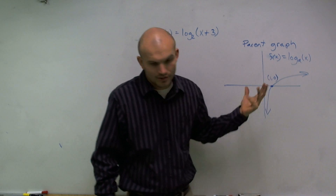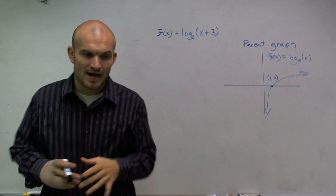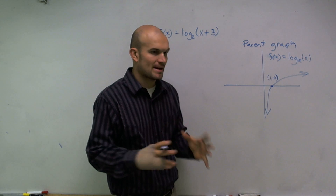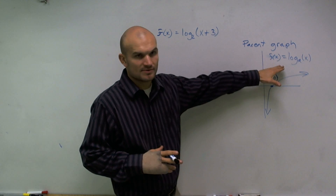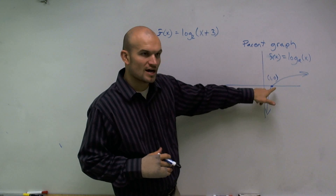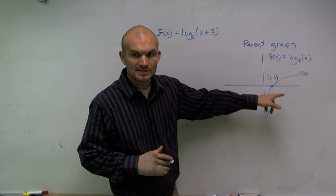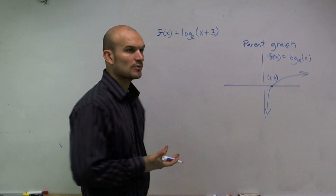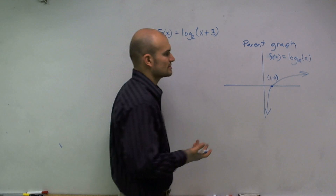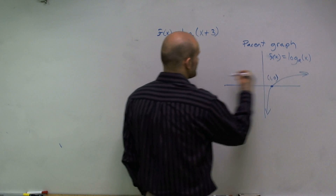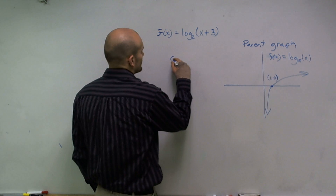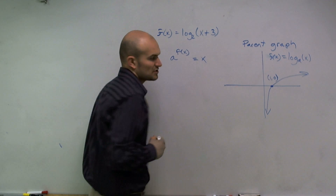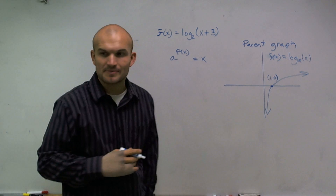One thing to notice about logarithms — their graphs, without any transformations, doesn't depend on the base, and is always going to cross at (1, 0). Why does the parent graph cross at (1, 0)? Well, remember what a logarithm states: it's saying a to our f of x equals x, if we transfer it to exponential form.